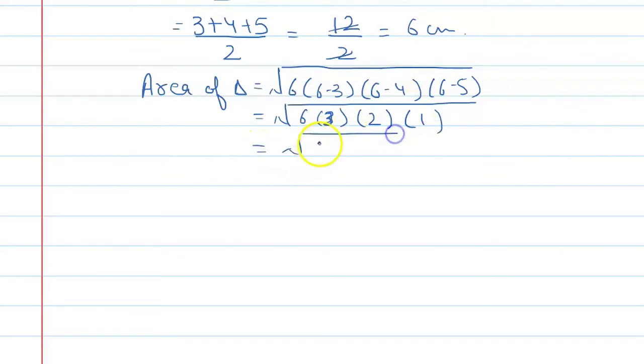It is 6 into 3 into 2 into 1. So the answer is 6 cm square. What will the final answer be? Area of triangle is 6 cm square.